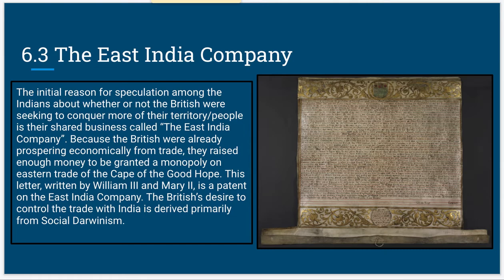The East India Company eventually was monopolized by Britain, because they raised enough money to carry out this monopoly. That also granted them trade east of the Cape of Good Hope, put forth by William III and Mary II. They basically had a full patent on this company, granting them basically all of India's economy.